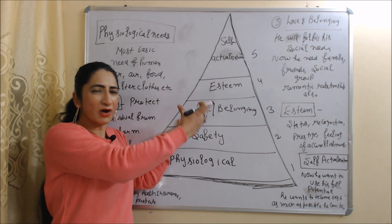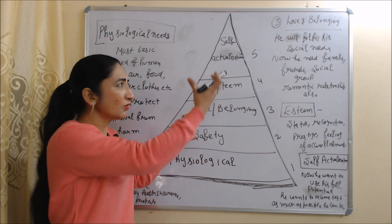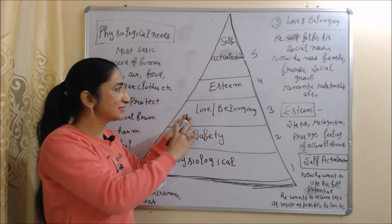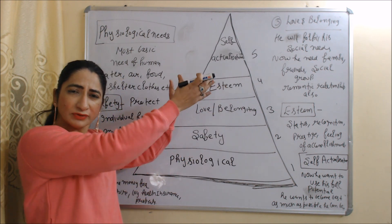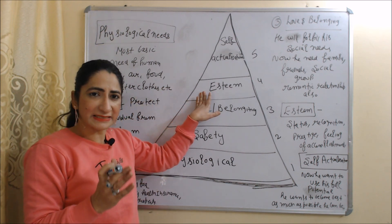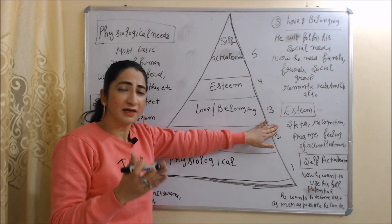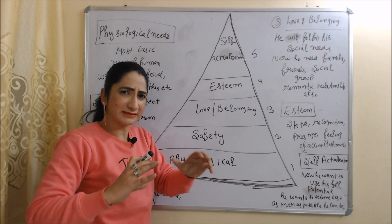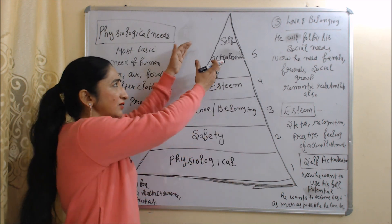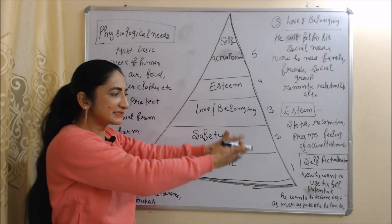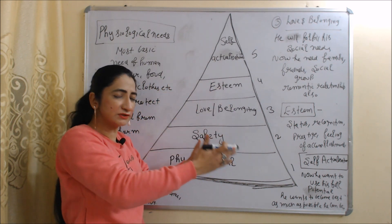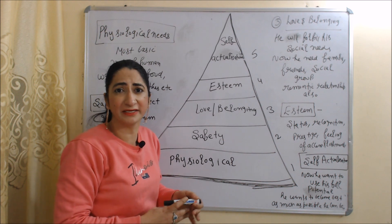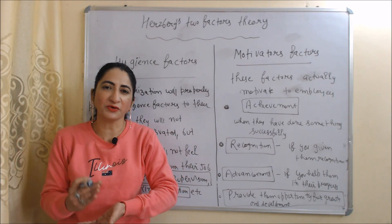Once safety needs are satisfied, the individual moves to love and belonging needs — needing family, friends, social groups, and even romantic relationships. Once that is satisfied, the next is esteem needs: status, recognition, prestige, and feelings of accomplishment. Finally, self-actualization means wanting to use one's full potential and become the best one can be.